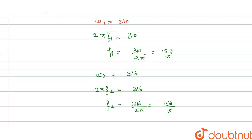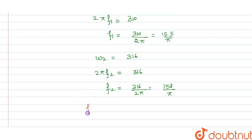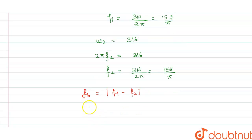This is our angular frequency 2. We know that beat frequency is the difference of frequency 1 minus frequency 2 in absolute value.